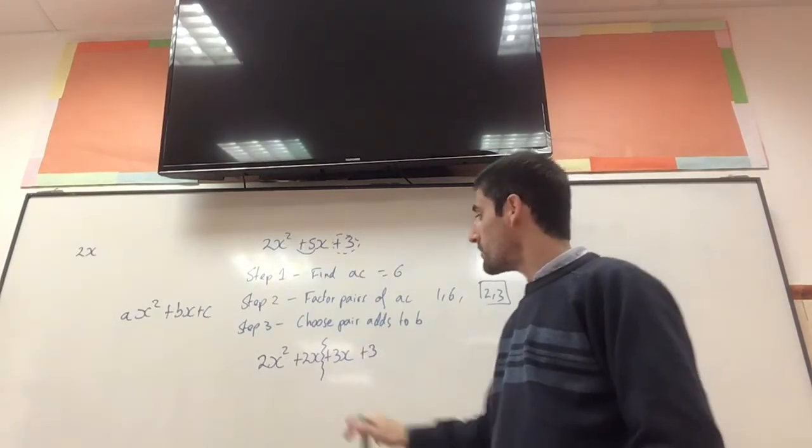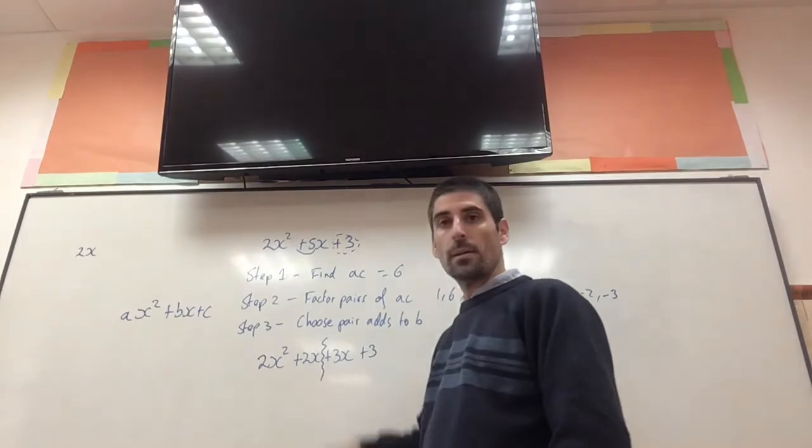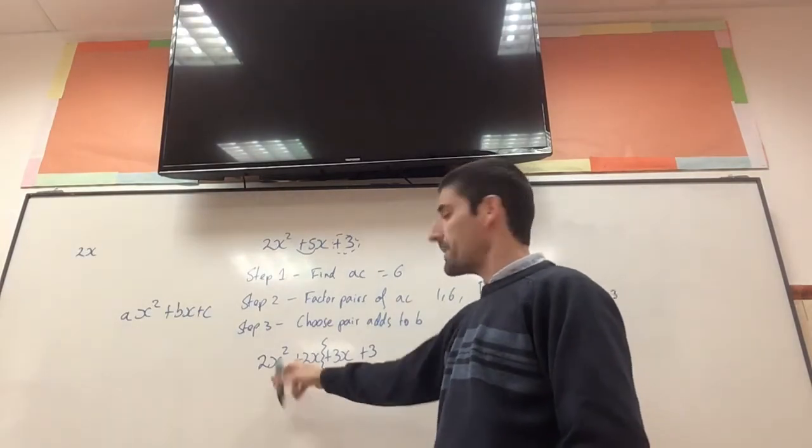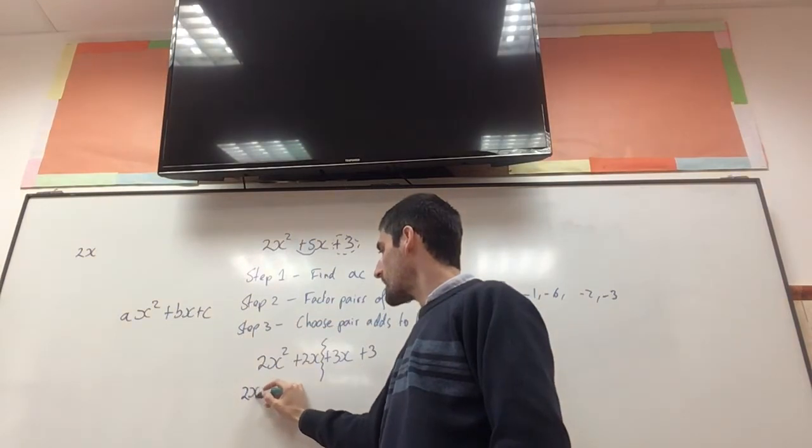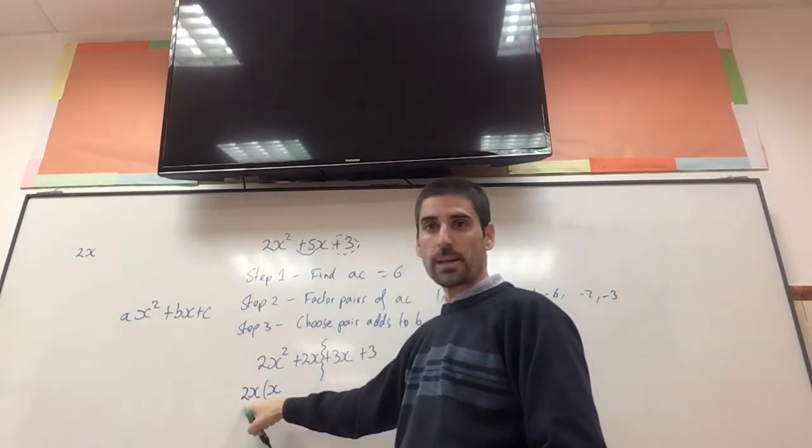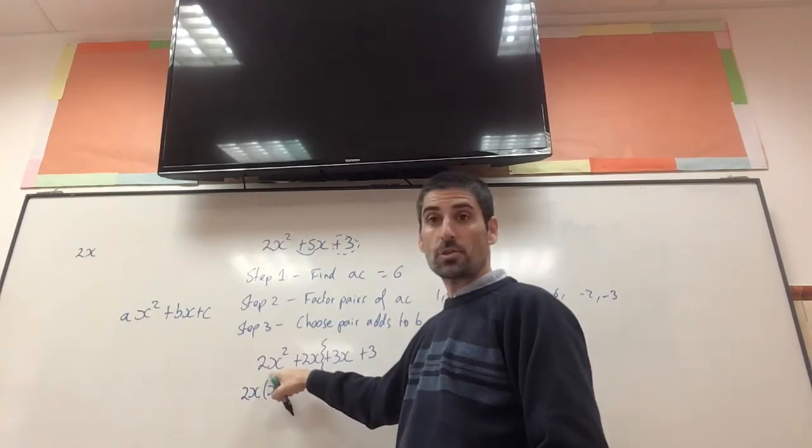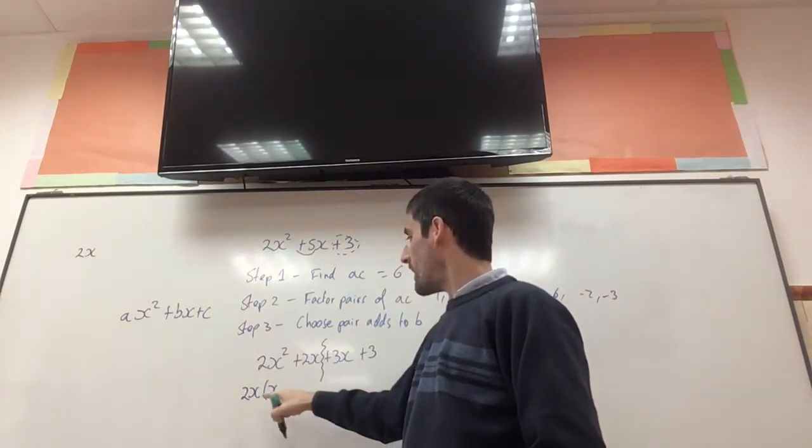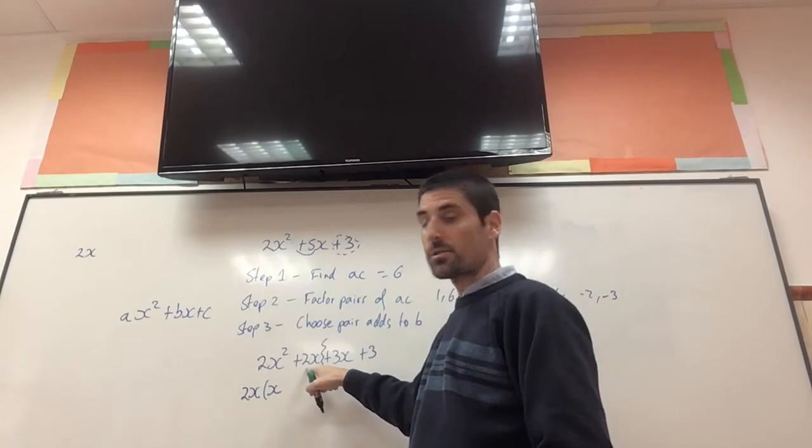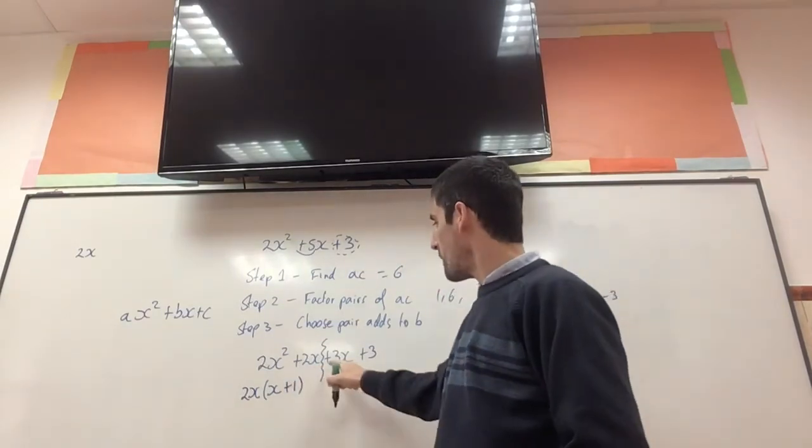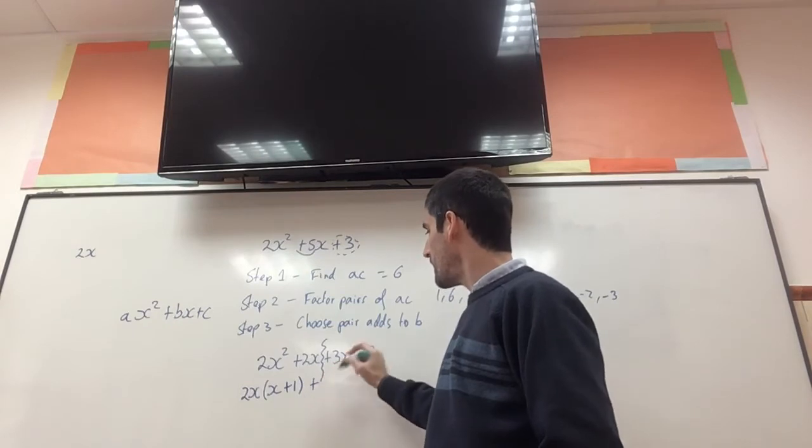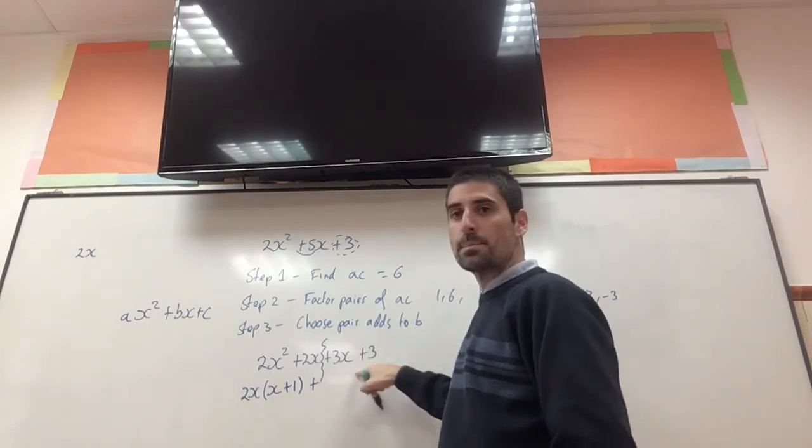Fully factorise. So if I factorise here, the biggest number that goes into 2 and 2 is 2, and then I've got an x as well. So this is 2x that multiplies x, so 2x times x is 2x squared, and 2x times what makes 2x? 1. Plus, because I've got plus there, and then factorise this bit here.